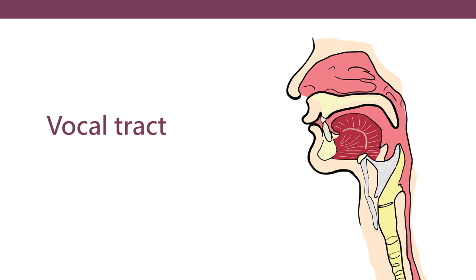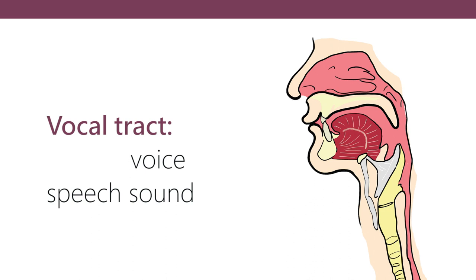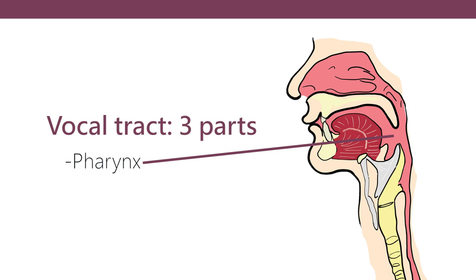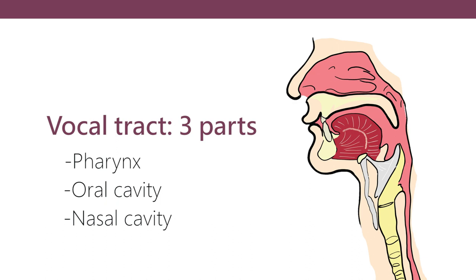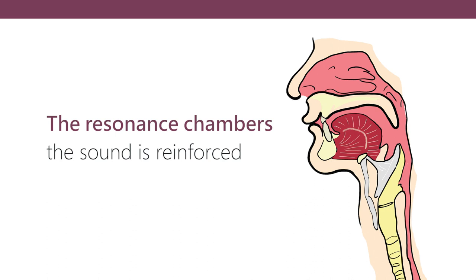Vocal is the adjective for 'voc,' which means voice or sound — in this particular case, speech sounds. So 'vocal tract' is the tract in the human body where speech is produced, and that consists of three parts: the pharynx, the oral cavity, and the nasal cavity. They're also called the resonance chambers. 'Resonance' because when sound resonates, it is reinforced.